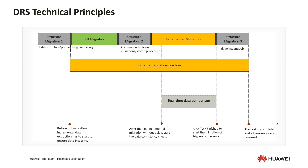At the same time, before the formal migration of DRS, DRS will have a log pre-fetching process to download the source database logs and cache them on the DRS instance node to ensure DRS can capture any new business changes added to the source database during the full migration stage. After full migration is complete, the incremental migration playback will begin in the startup phase. This is the key to ensuring the business is not interrupted during synchronization. After full migration, we move on to the third stage where other objects like indexes and views are created.